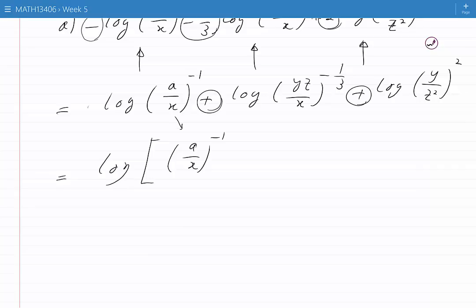So we get log of: A over X to the power of minus 1, times YZ over X to the power of minus 1/3, times Y over Z squared to the power of 2. This expression involves only one log.